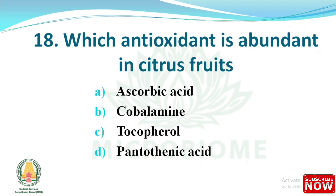Question: Which antioxidant is abundant in citrus fruits? Options: ascorbic acid, cobalamin, tocopherol, and pantothenic acid. The right answer is option A - ascorbic acid.